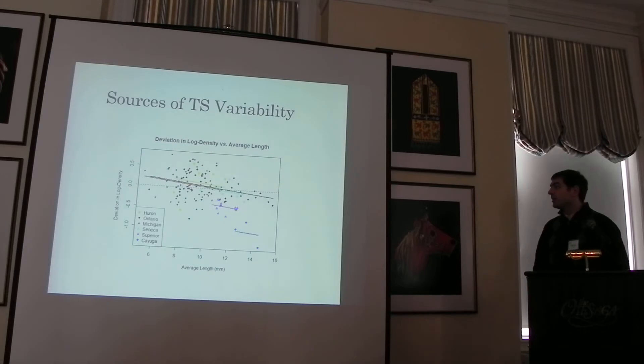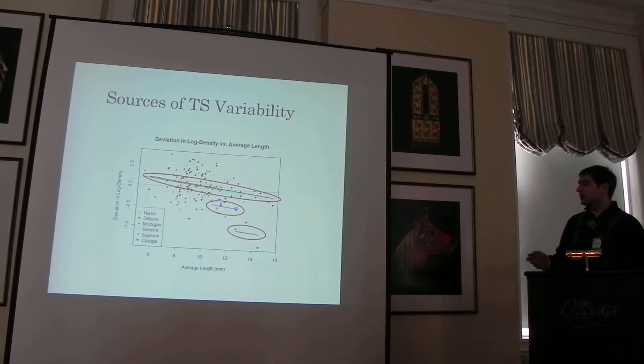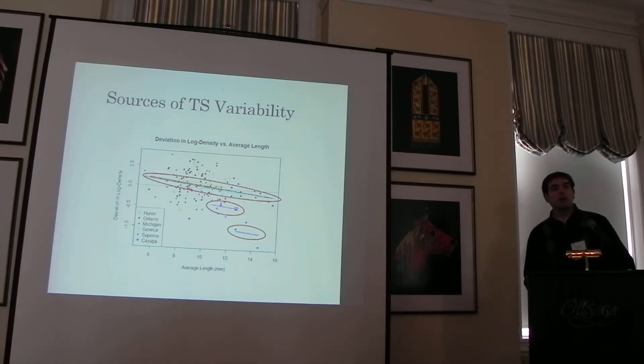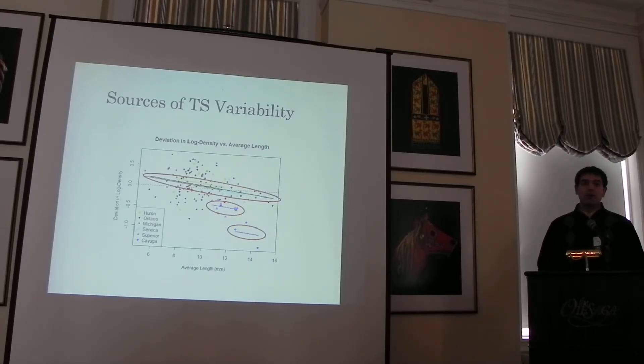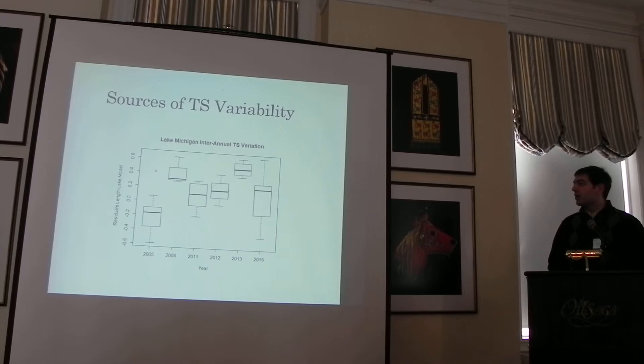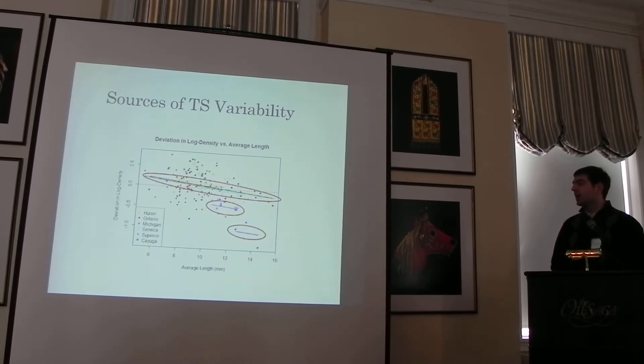If you also account for lake, you see differences in the lakes, which is interesting. The way it works out is Ontario, Michigan, and Seneca pretty much fall into the same group. And Superior and Cayuga are way down below. What that means is down here you're getting more acoustic return per mysid, because you're seeing less mysid than you expect, more acoustic return for their size. That could maybe be caused by condition or maybe behavior if they're orienting themselves somewhat differently. So that's an interesting result which may have something to say about the ecology of the different systems.